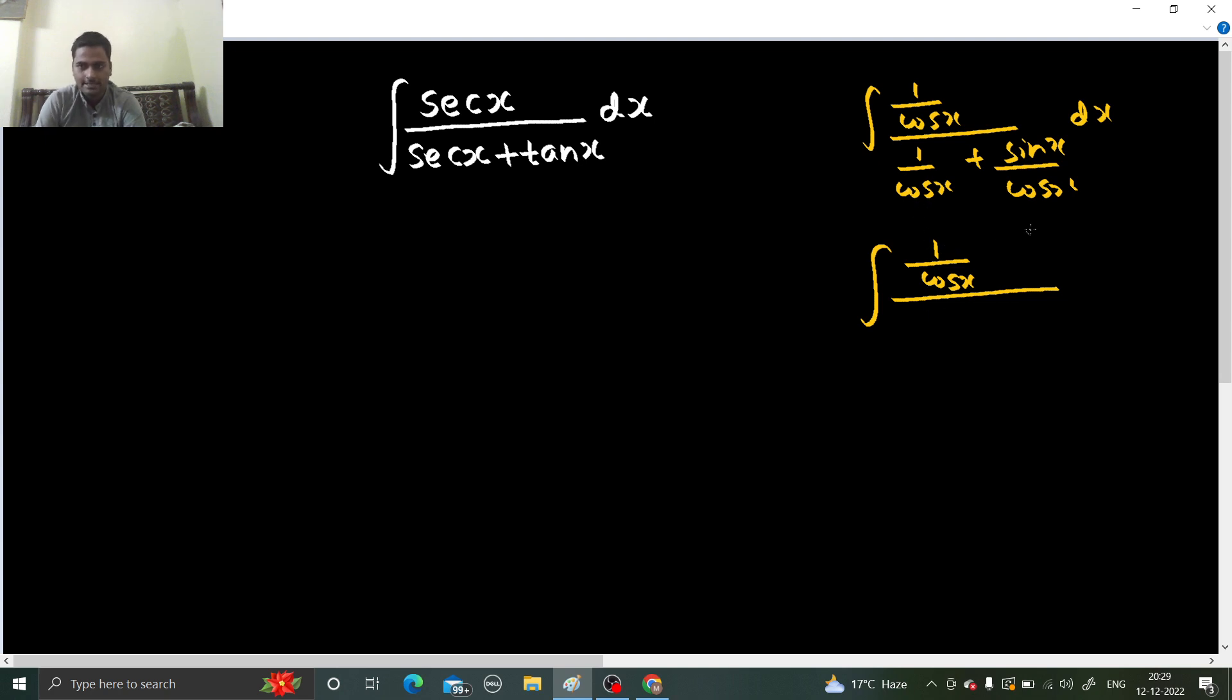So, 1 upon cos x and here also I have cos x so I can write 1 plus sine x divided by cos x and a dx. Cos x gets cancelled. So you are left with 1 upon 1 plus sine x.